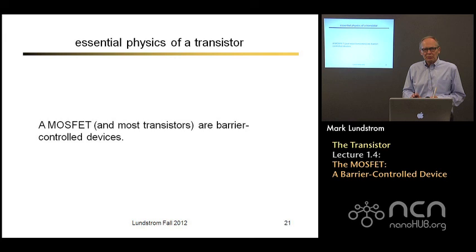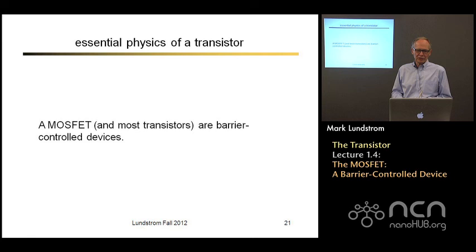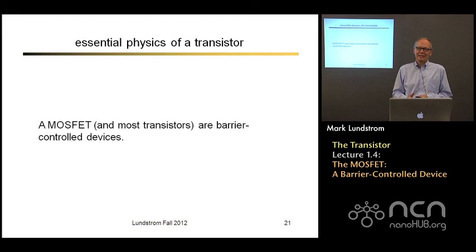I've given you a very simple physical picture of how a MOSFET operates in terms of energy band diagrams, and this is really the essential physics. This is what a transistor is all about — manipulating those energy barriers. A MOSFET is a barrier control device, and many different types of transistors operate on this principle. Now that we understand the essential physics, we can dive into the math and derive the IV characteristics. In the next lecture, we'll do that in the traditional textbook way before diving into how to refine that approach for the very small transistors being manufactured today. Thank you.